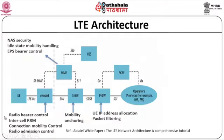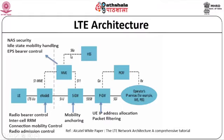This is what the LTE architecture looks like. User equipment connects to E-Node B, where LTE-U interface and radio bearer control, intercell RRM, connection mobility control, and radio admission control are all handled. On the other side, the MME handles idle-state mobility and bearer control. The SGW handles mobility anchoring, connected via S5/S8 interface to PGW, which connects to the operator's IP services. The MME is also connected to the HSS which holds home location register information. This is the overall LTE network architecture.